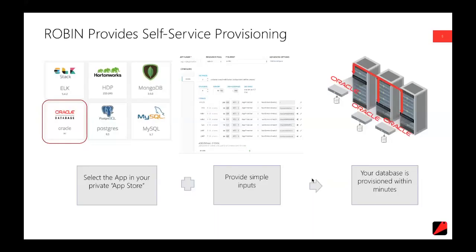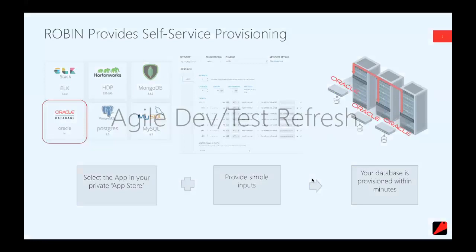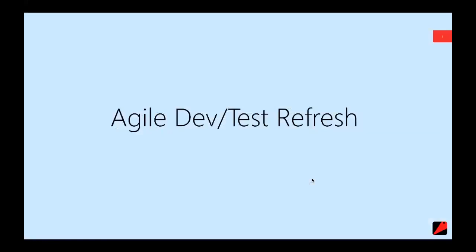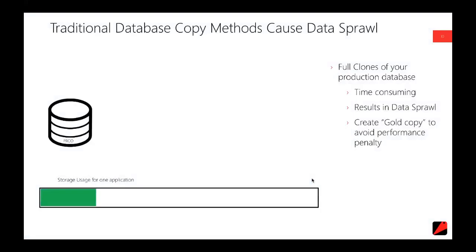We've got two instances that are both active on that shared database. Provisioning an Oracle RAC database was literally as simple as what you just saw. Moving on, let's look at refreshing. Robin is unique in its ability to provide, through its app-aware storage, snapshotting and thin cloning of the entire stack.